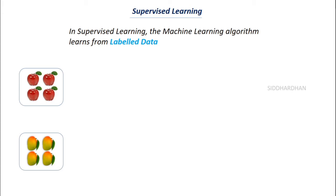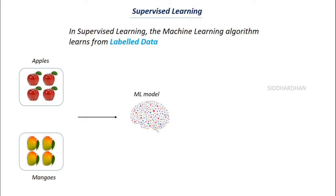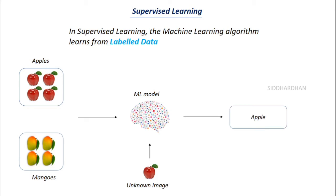Let's understand this more deeply with an example. We want our machine learning model to see an image and recognize whether it represents an apple or a mango. In supervised learning, we feed images of apples and mangoes and tell the machine that these images represent apples and these represent mangoes. The model then tries to find the relationship between the images and maps them to the correct labels.